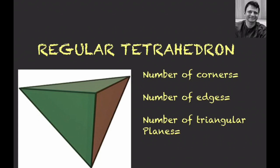We know that a regular tetrahedron forms when we combine the alternate corners of a cube. In a regular tetrahedron, the number of corners is equal to 4, the number of edges is equal to 6, and the number of triangular planes is equal to 4.